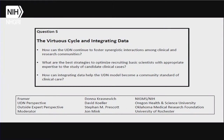This doesn't need any introduction after this morning's discussion — we've actually brought these issues up already. The virtuous cycle and integrating data: the first question is how can the UDN continue to foster synergistic interactions between clinicians and research communities? What are the best strategies to optimize recruiting basic scientists with appropriate expertise to study candidate clinical cases? And what are candidate clinical cases? How can integrating data help the UDN model become a community standard of clinical care?